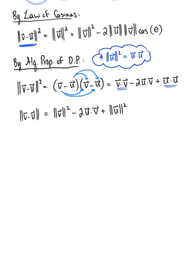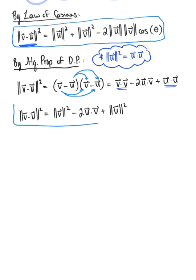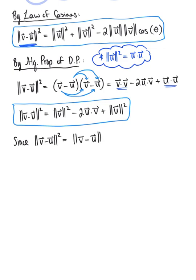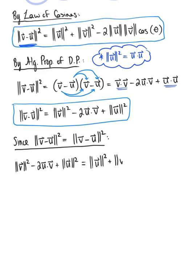We have now established two different formulas for the magnitude of vector v minus vector u squared — one from the law of cosines and one from the algebraic properties of the dot product. Equating these two expressions gives us: the magnitude of vector v squared minus 2(u · v) plus the magnitude of vector u squared equals the magnitude of vector u squared plus the magnitude of vector v squared minus 2 times the magnitude of u times the magnitude of v times cosine of theta.